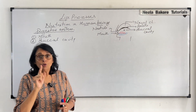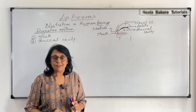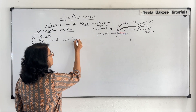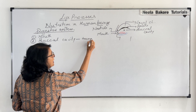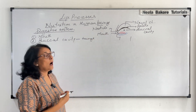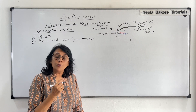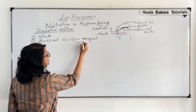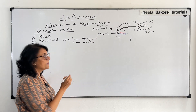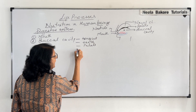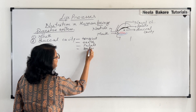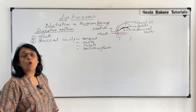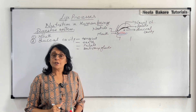The mouth is the opening of our digestive system or digestive tract, and it leads into the buccal cavity. In this cavity, we will discuss the tongue — how it helps in tasting food and in mixing food with saliva — as well as different types of teeth, the palate, and the salivary glands. These salivary glands pour saliva into the buccal cavity, and we will also discuss the functions of saliva.